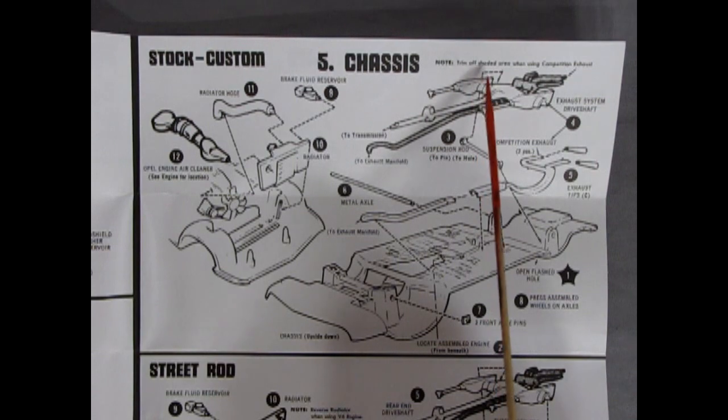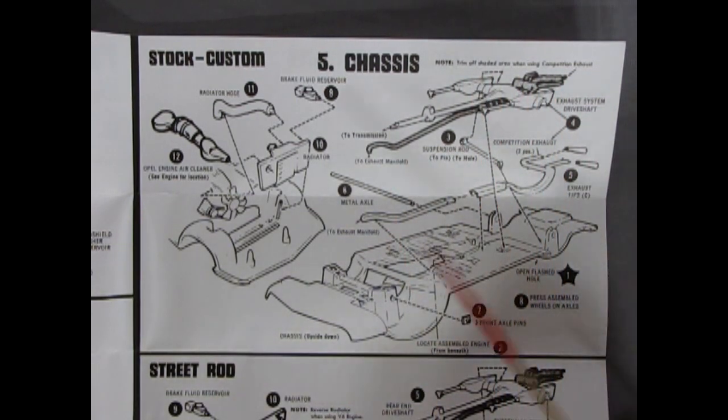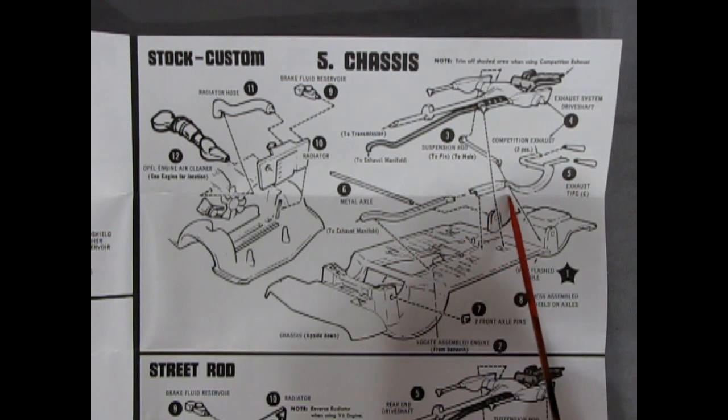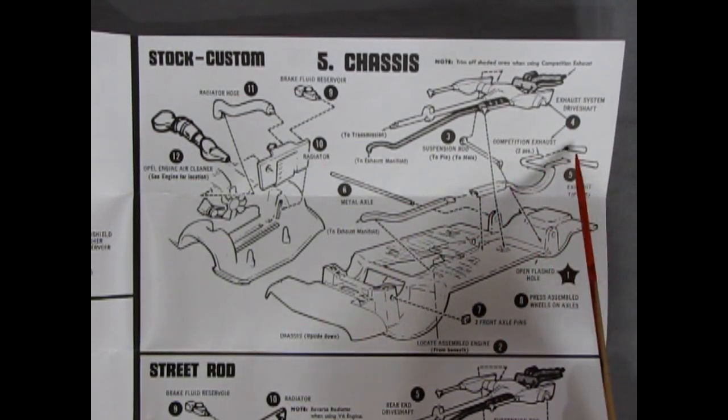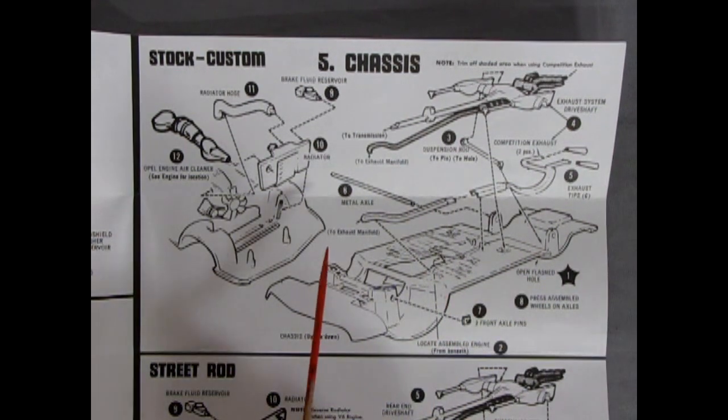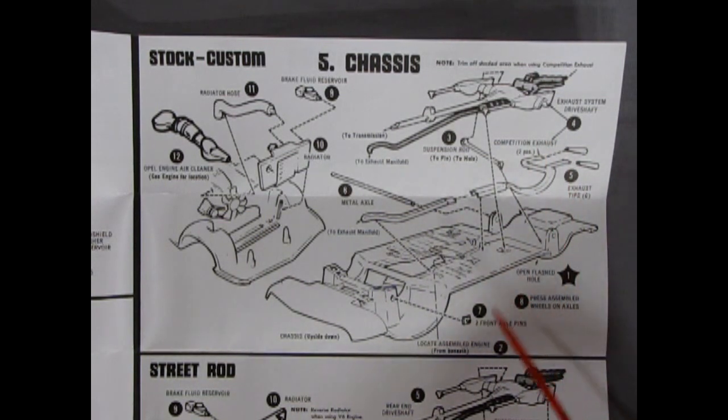What's it say? Trim off shaded area when using competition exhaust. So that's a stock exhaust. Then they have this competition exhaust that splits down. Gives you the double pipes from your V6. With of course little trumpets at the back. The metal axle will go through the rear suspension. And then all this drops on top. So you don't see that. You've got front axle pins going in there.